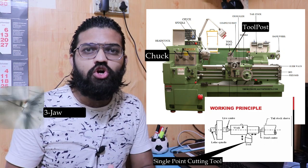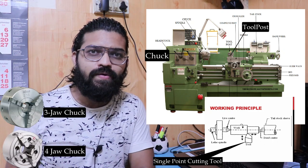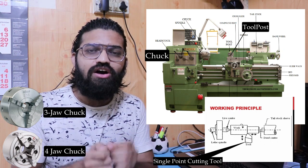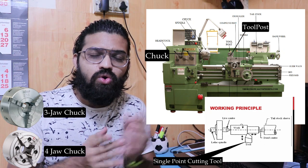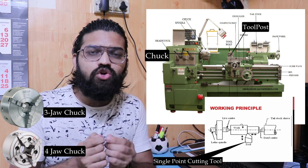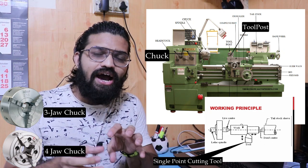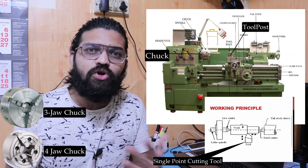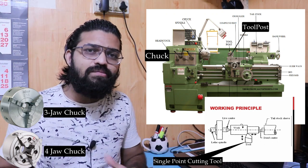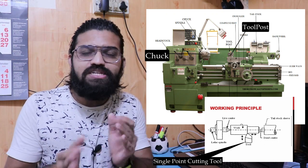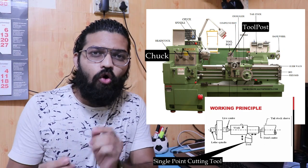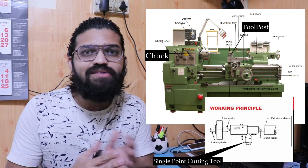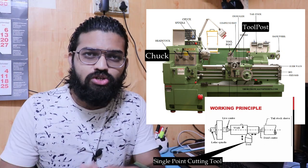The workpiece is held securely and tightly on the chuck, which is the work-holding device in the lathe machine. The chuck can be either a three-jaw chuck or a four-jaw chuck. The tool is fed against the rotating workpiece and the material gets removed — we can do turning, facing, and taper turning operations. That is the basic principle of the lathe machine's working.